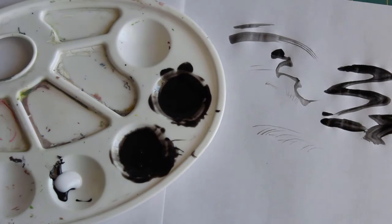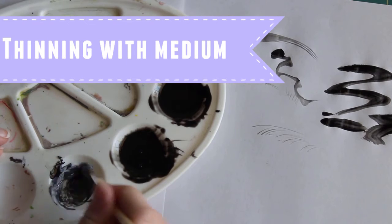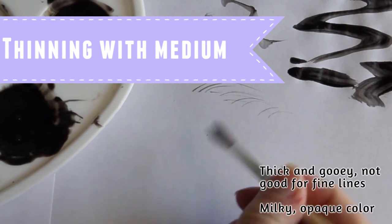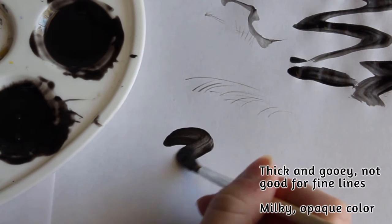Last up is the medium. People ask about this as a thinner all the time and I'm only including it to show why it's not a good option for thinning paints. Acrylic medium is just paint without pigment.